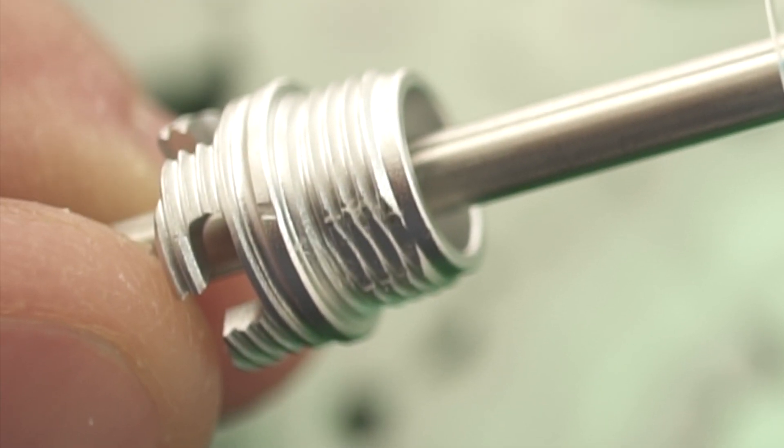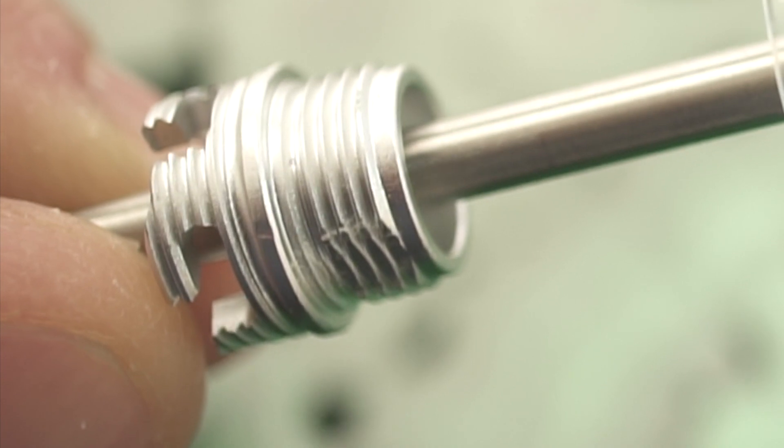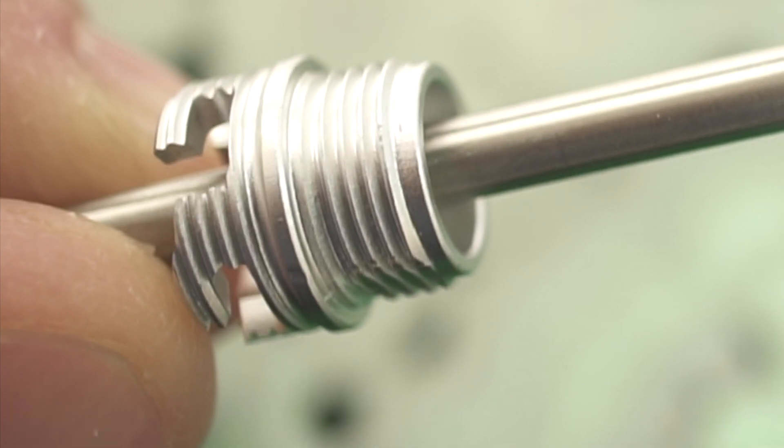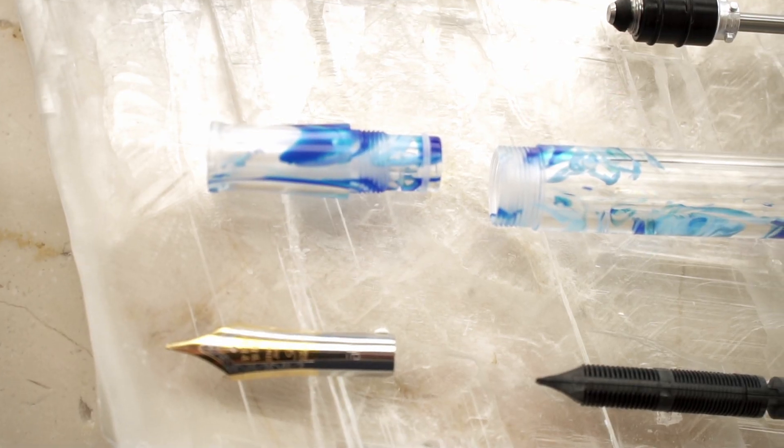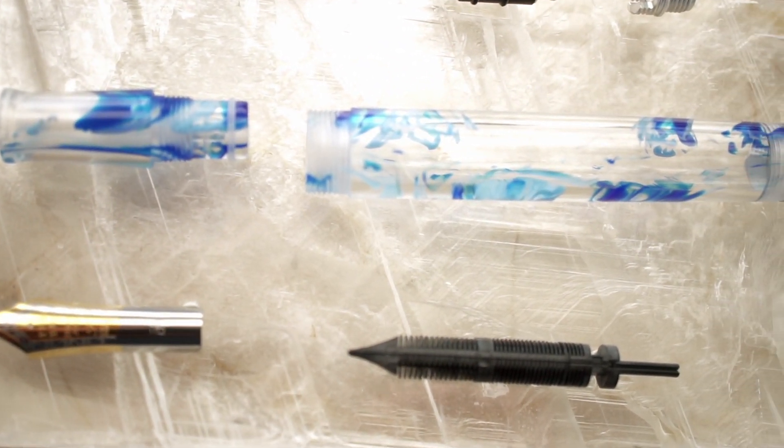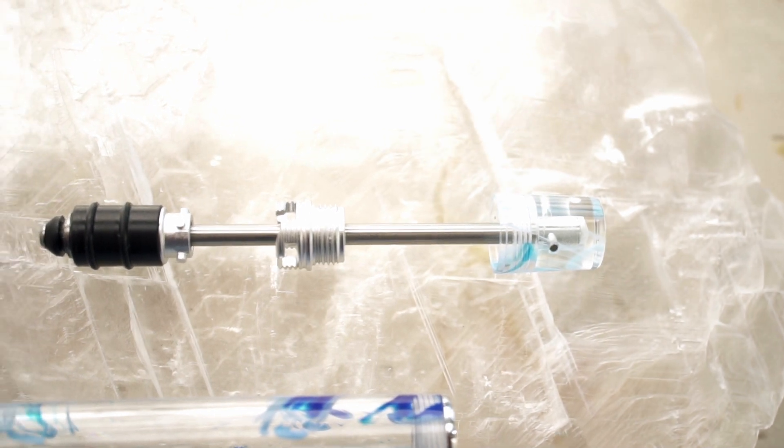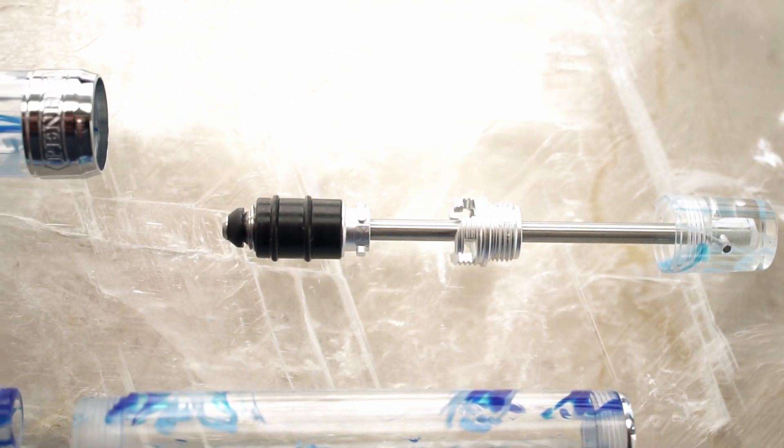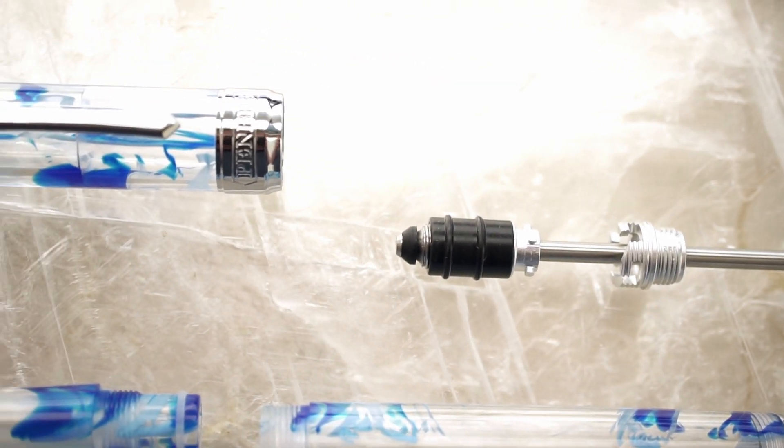You can see the flat spot on the threads on the unit as it rotates away from my thumb. Here's the pen disassembled: the nib, the section, the bead, and then the barrel. And the filling unit with the end cap and the new metal section that engages the piston, and then the cap.